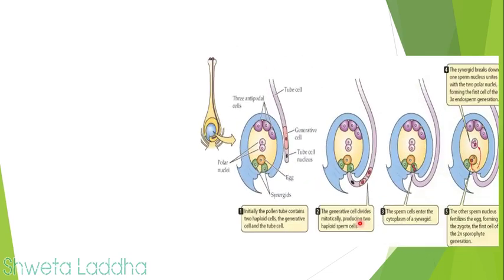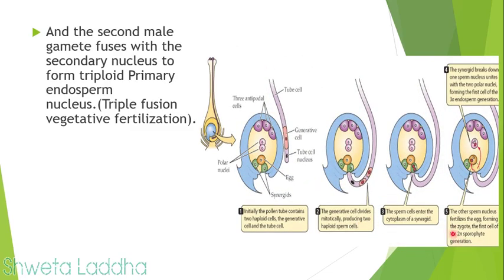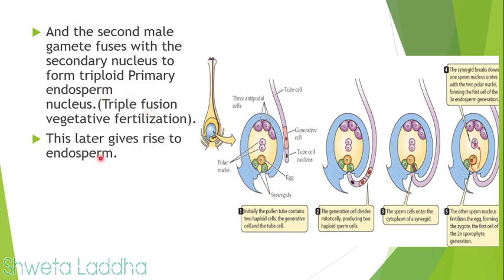After syngamy, the second fertilization takes place. The second male gamete fuses with the secondary nucleus. Since the secondary nucleus is diploid and the second male gamete is haploid, this is called triple fusion, because the primary endosperm nucleus formed as a result has three sets of chromosomes. The result of triple fusion is the formation of endosperm, so this is also called vegetative fertilization.